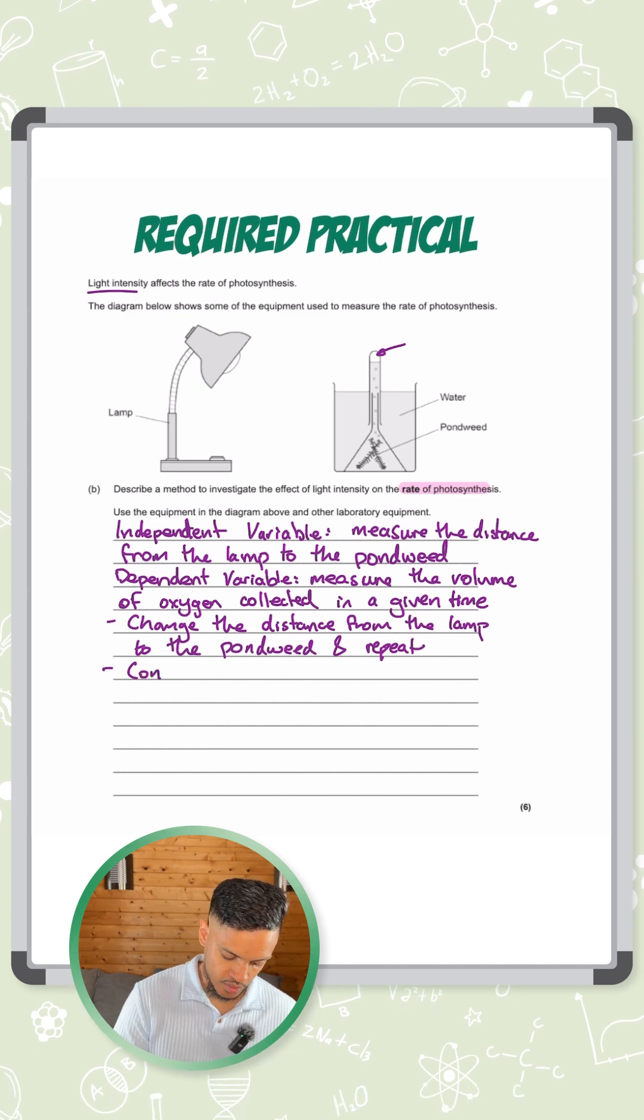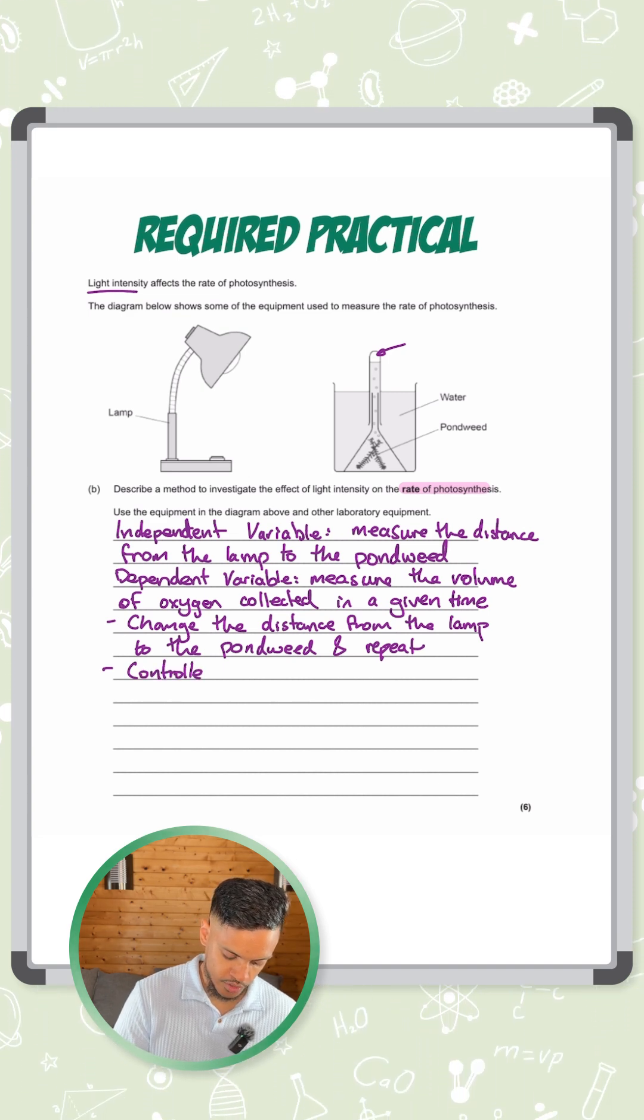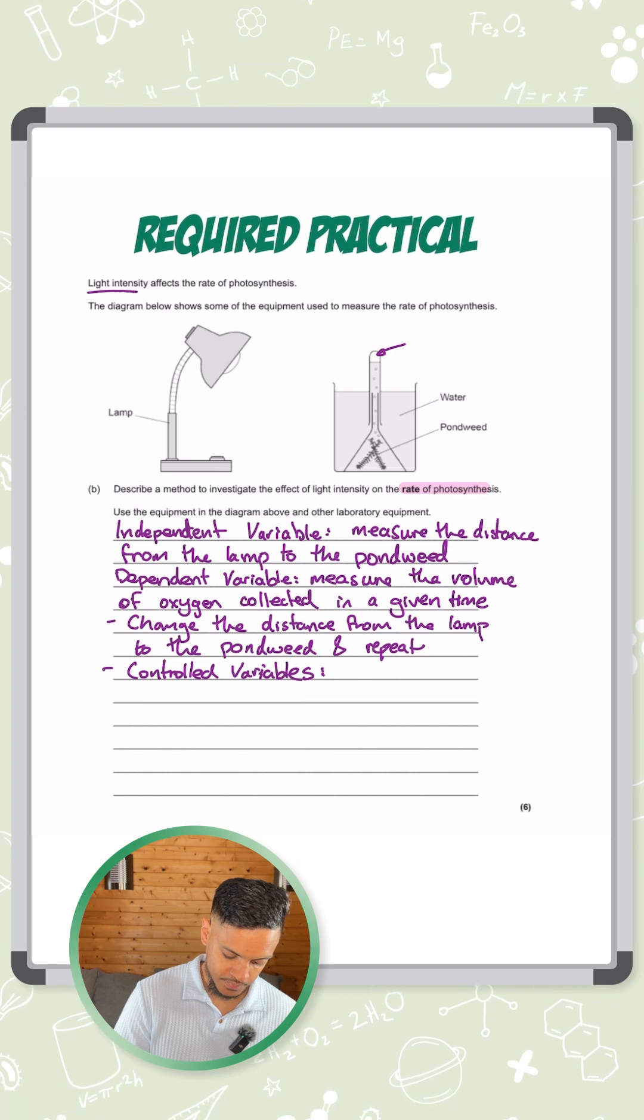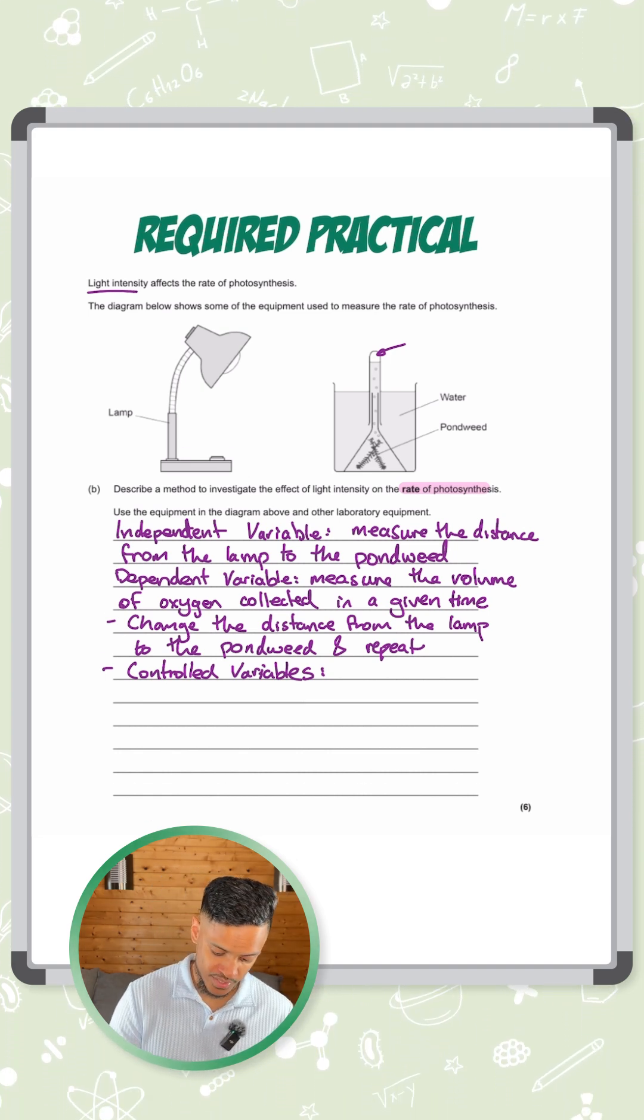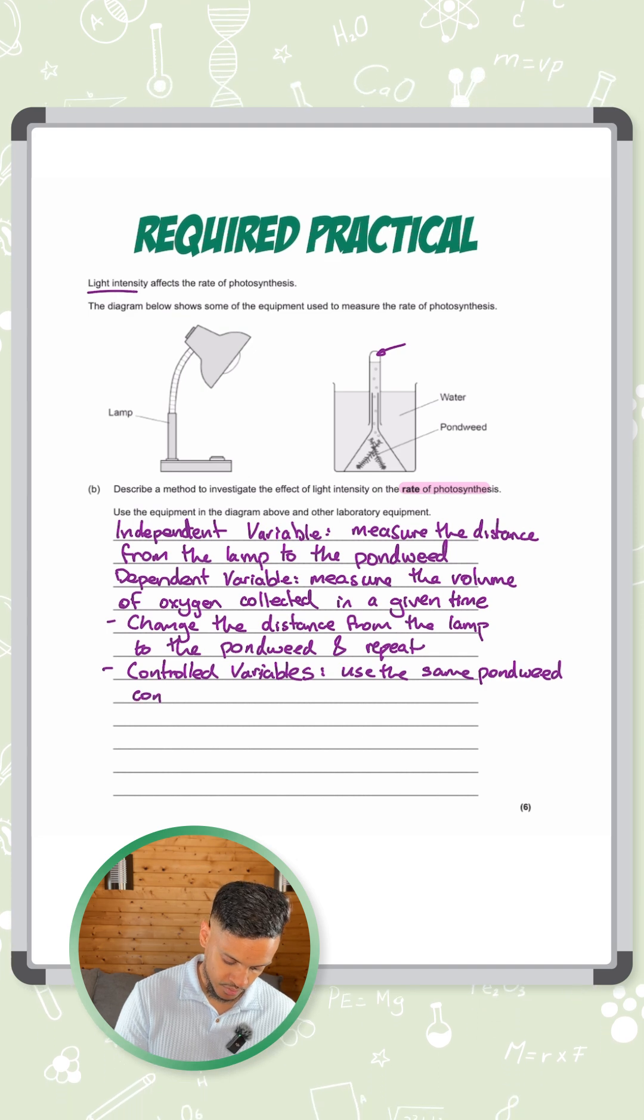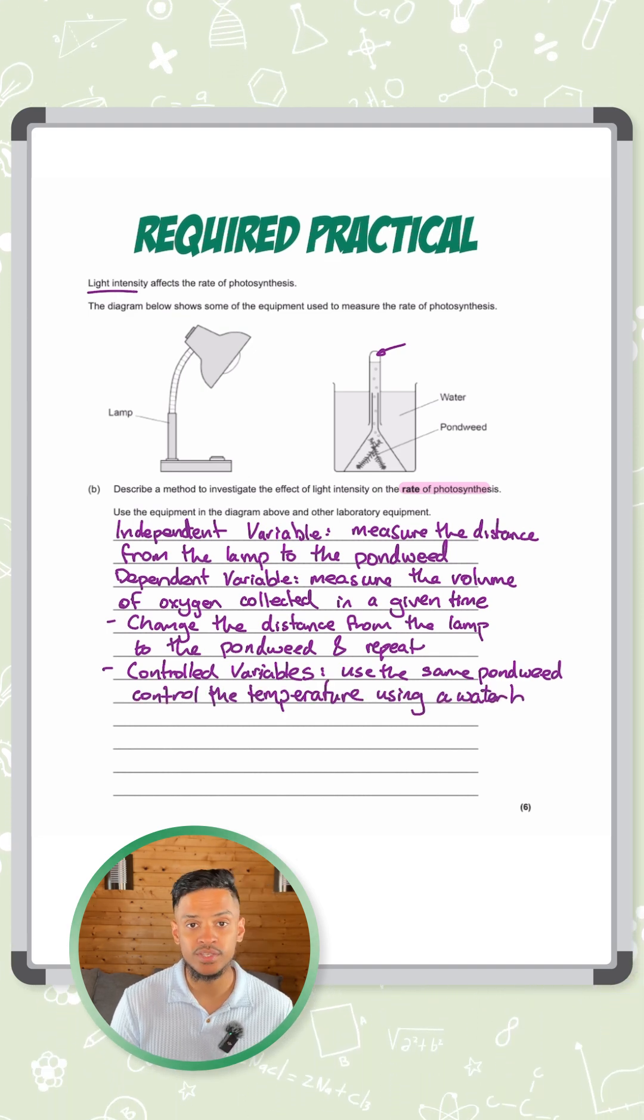What are controlled variables? What do we need to keep the same in order for this to be a fair test? One of the things you could say is use the same type of pondweed. You could also say control the temperature and you can do that by using a water bath.